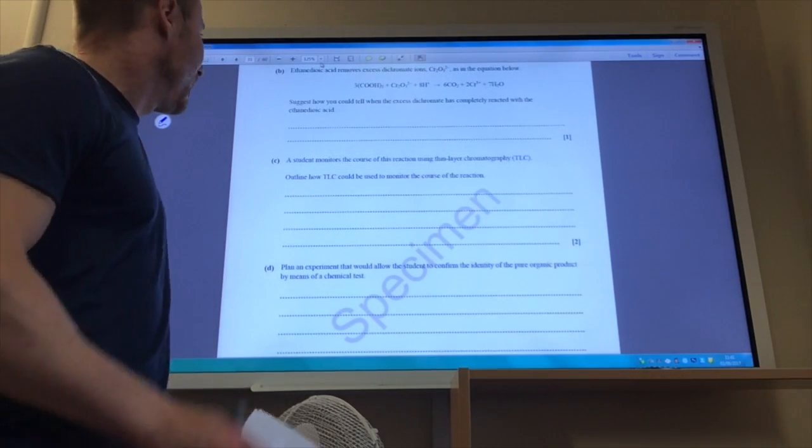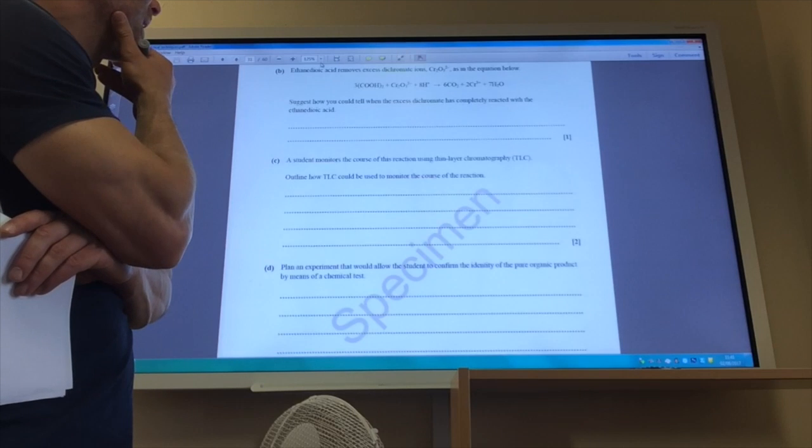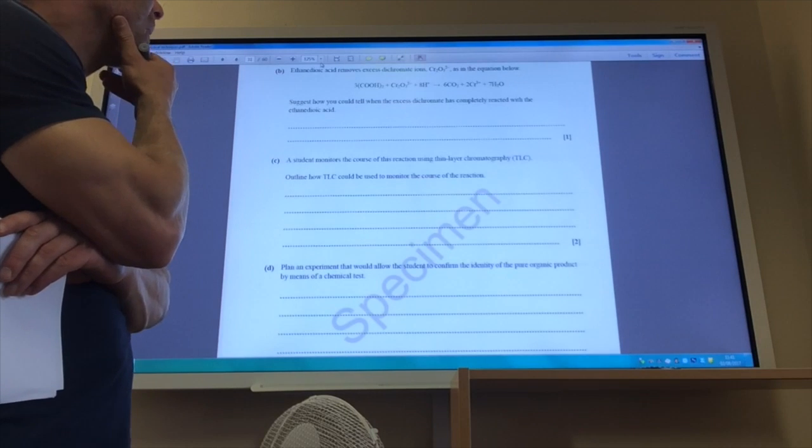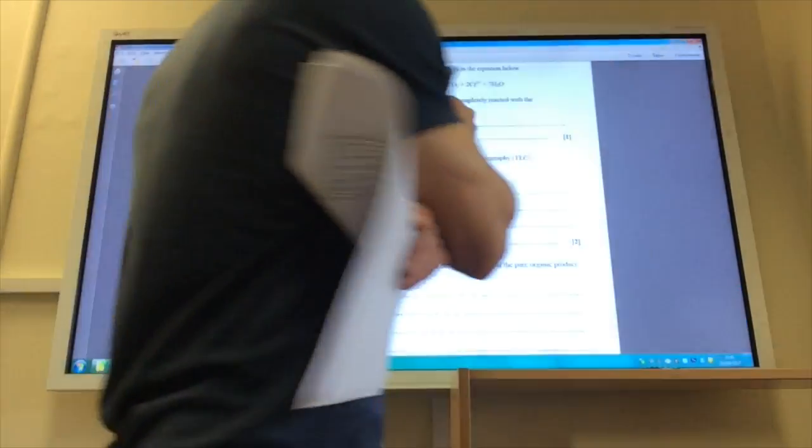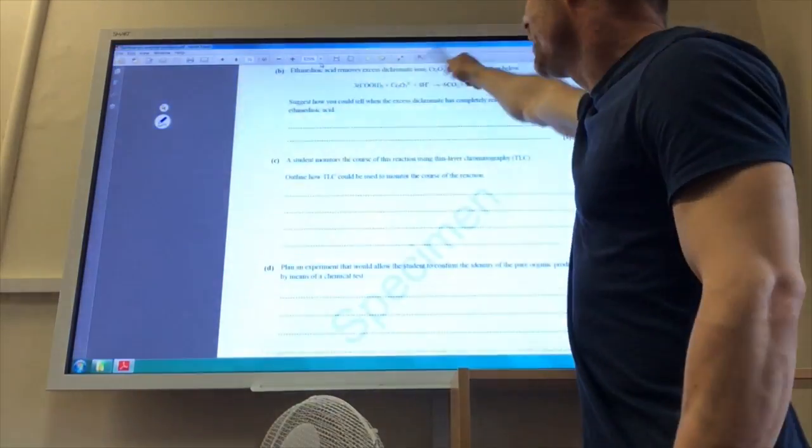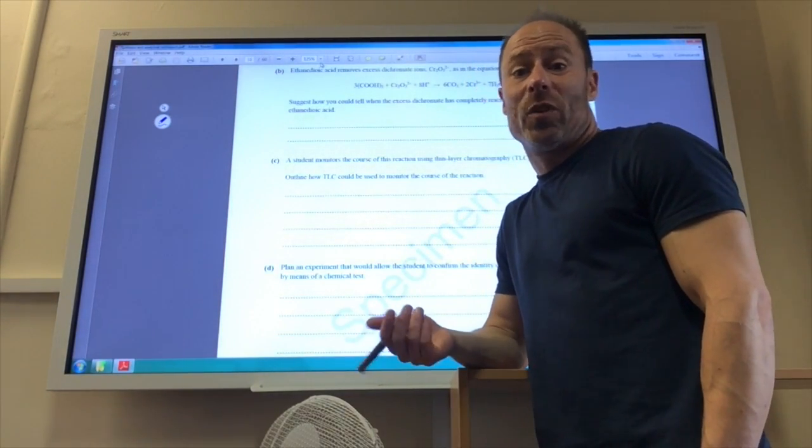Ethanedioic acid removes excess dichromate as the quote is below. How would you tell when the excess dichromate has reacted completely? Well, it would stop fizzing because one of the products is carbon dioxide gas, so while this reaction is happening you will see bubbles appearing. Once it's finished, no more carbon dioxide gas, no more bubbles.